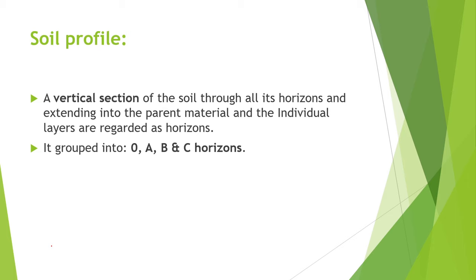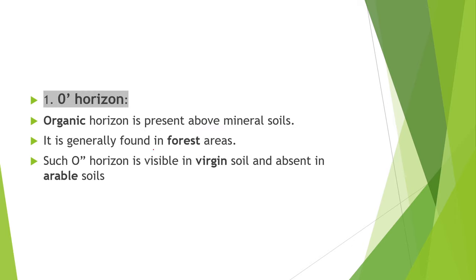Next topic is soil profile. Soil profile is nothing but the vertical section of soil, which we call soil horizons. The individual layers present in this vertical section are called horizons. It is grouped into O horizon, A horizon, B horizon and C horizon. The O horizon is generally found in forest soil. It is present in virgin soil but absent in arable soil.